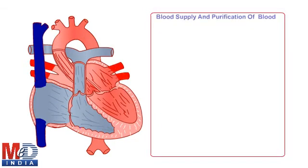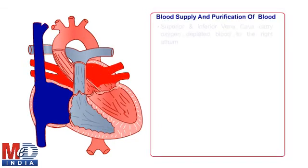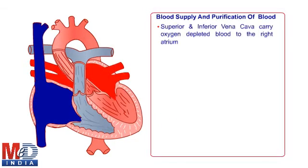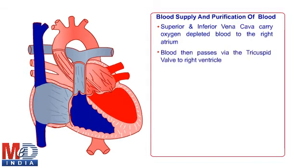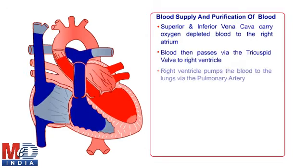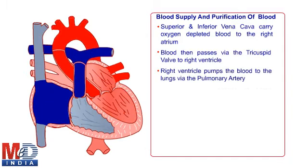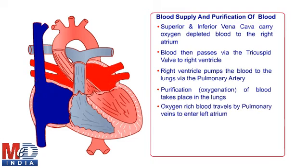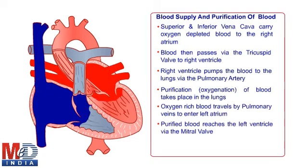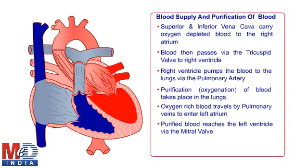This slide shows us the normal flow pattern of blood from one chamber to another. The flow of blood is unidirectional, and valves between the chambers prevent backflow.